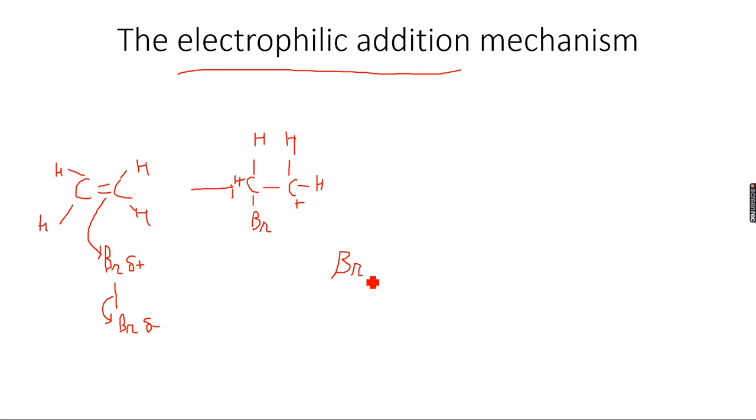This forms a Br negative ion and it has a lone pair of electrons, obviously a lone pair because it got both the bonded pair of electrons from the Br-Br bond. Now this attacks the carbocation.